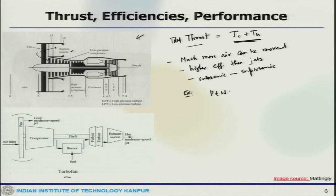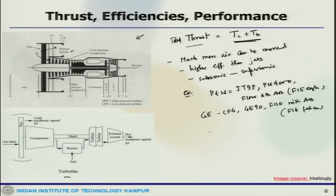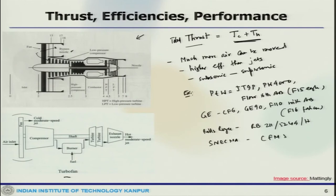For example, Pratt and Whitney JT9D, PW4000, F100 with afterburner — used in the F-15 Eagle. Then GE CF6, GE90, F110 with afterburner — used in the F-16 Falcon. Then Rolls-Royce RB211-524, and Snecma CFM56. These are some of the examples, but an exhaustive list was already discussed during the introduction.